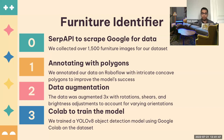YOLO stands for You Only Look Once — the idea is that the model can look at something for the first time and classify something it hasn't seen before. Our final furniture model had a MAP50 value of 0.653, a recall value of 0.627, and a precision value of 0.783, after being trained for 25 epochs.